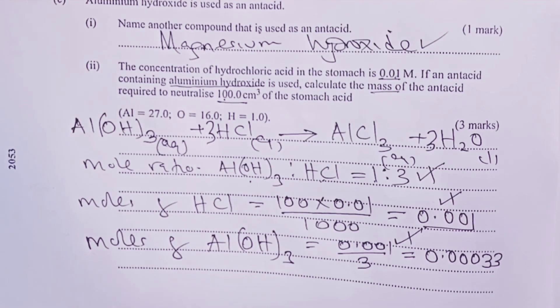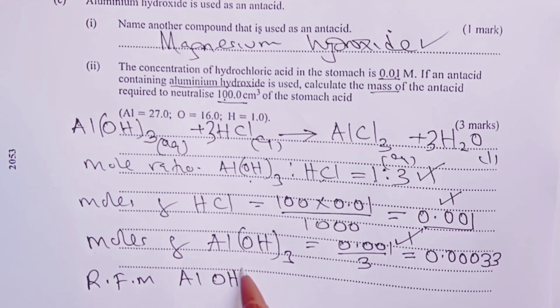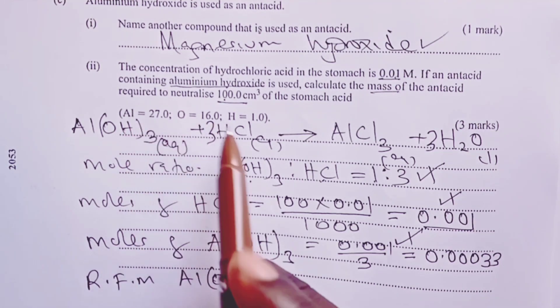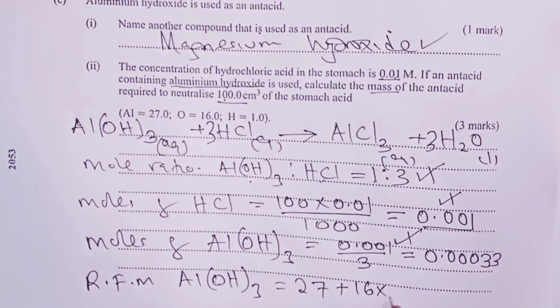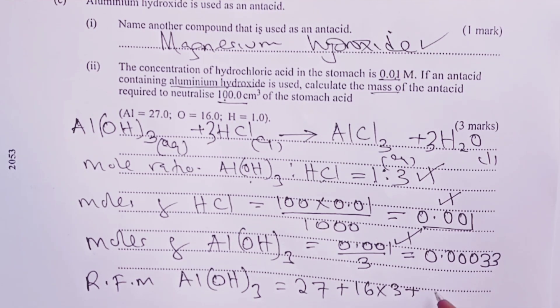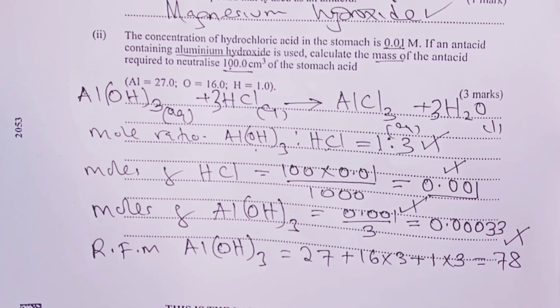From here, because we are told to get mass, we now need to calculate the relative formula mass for our aluminium hydroxide, Al(OH)3. And as you can see from the relative atomic masses given, this would be 27, added to 3 times oxygen, that is 16 by 3, added to again 3 times hydrogen. And this gives 78 as the relative formula mass. Next half mark is earned at that point.